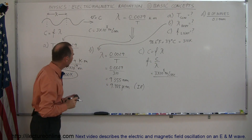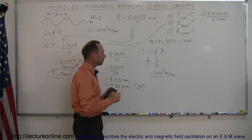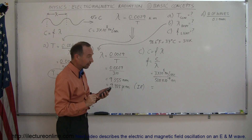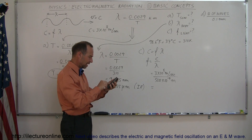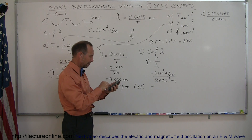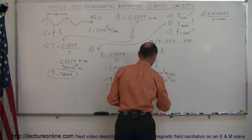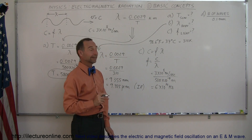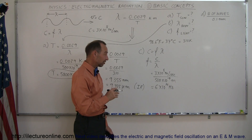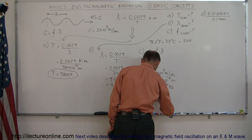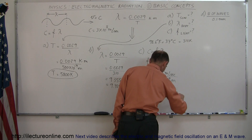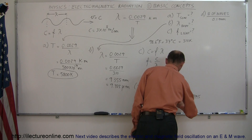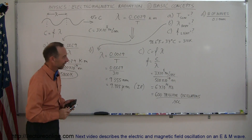Calculating that: 3 times 10 to the 8 divided by 500 times 10 to the minus 9 equals 6 times 10 to the 14 hertz. Ten to the 14 — 10 to the 9th is a billion, 10 to the 12th is a trillion — so that means 600 trillion oscillations per second. Light goes up and down 600 trillion times per second as it travels through space. That's almost unimaginable.